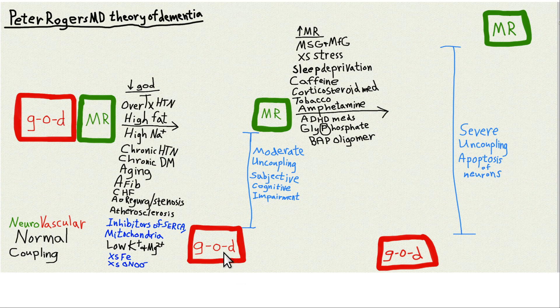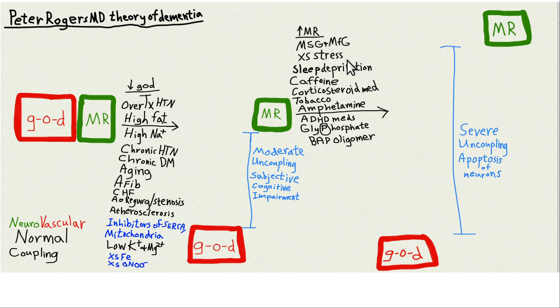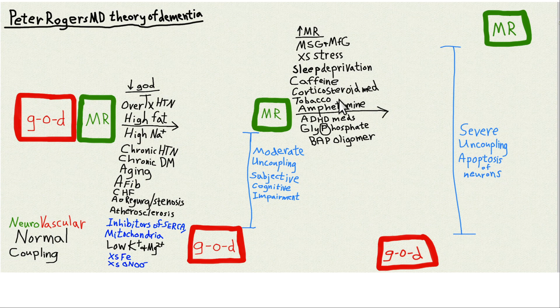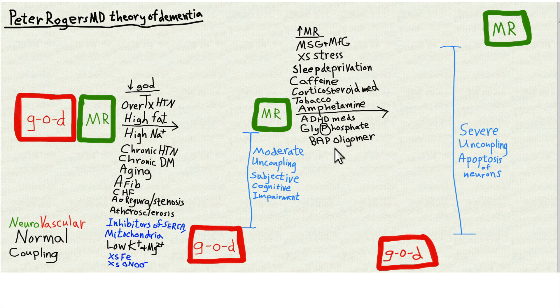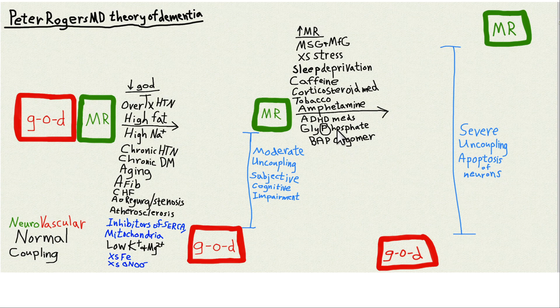Here is a drop because of lack of glucose and oxygen delivery. And it may or may not cause neurons to die by apoptosis. But when this gap gets even bigger, because you're simultaneously increasing the metabolic rate of these neurons due to stress, MFG, MSG, stress equivalents, sleep deprivation, caffeine, corticosteroid medications, stimulants, tobacco, amphetamine, ADHD meds, glyphosate is also an excitotoxin. Beta amyloid protein oligomers can push on the NMDA receptor and have an excitotoxin effect. In fact, excitotoxin is another way of saying stimulant to increase the amount of metabolic rate in the neuron.